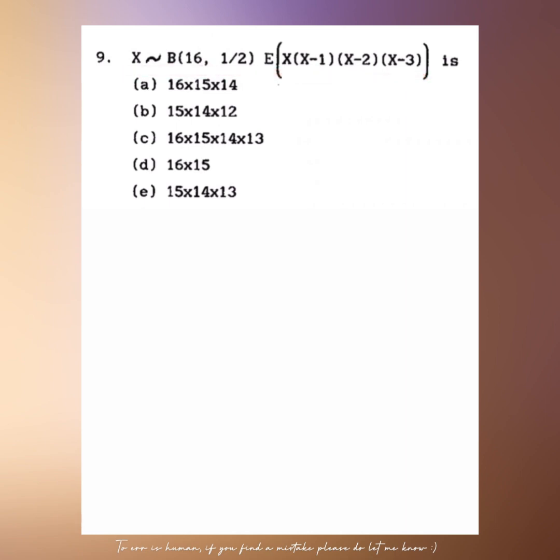Next question, x belongs to binomial 16, 1 by 2 and we have to find this expectation. Whenever x belongs to binomial distribution, expectation of x factorial r is equal to n factorial r into p to the power r. Here r is equal to 4. We will simply expand n factorial 4, p to the power 4.